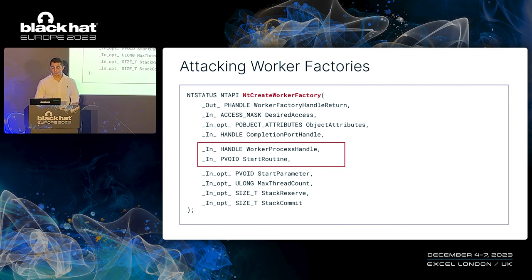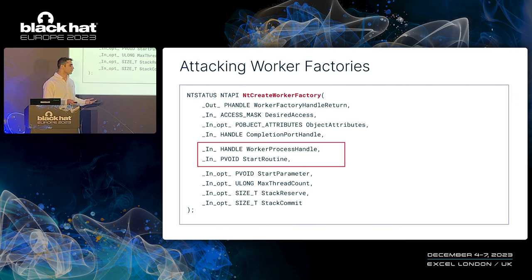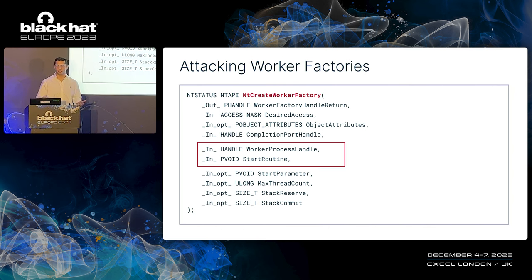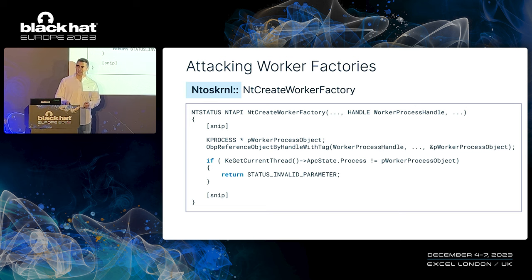With the goal of taking over worker threads, the relevant target would be the start routine, which is basically the entry point of the worker threads. Usually this routine serves as the thread's scheduler, responsible for dequeuing and executing work items. The start routine can be controlled in the worker factory creation system call, and more interestingly, it accepts a handle to the process for which to create the worker factory. However, trying to create a worker factory for another process fails due to an incorrect parameter — there is a validation ensuring no worker factories are created for processes other than the current process.